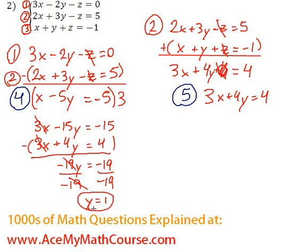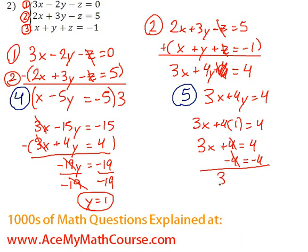Great. Now that we have y, things become really easy. And I can just plug in the y, either into equation number 4 or 5. I'll pick equation 5. So let's plug in the 1 over here. So 3x plus 4 times 1 equals 4. So 3x plus 4 is equal to 4. Now I can subtract 4 from both sides of the equation. And 3x is equal to 0. Then we divide both sides by 3. And x equals 0.